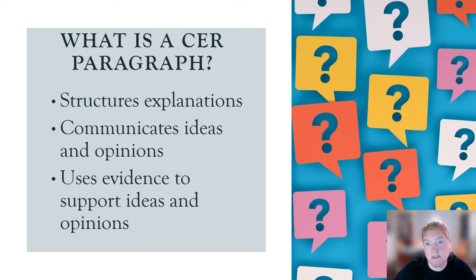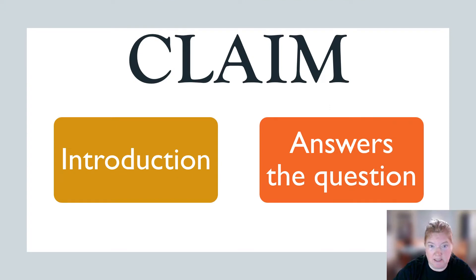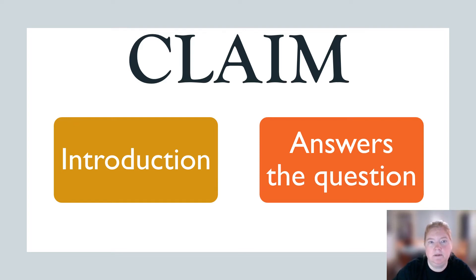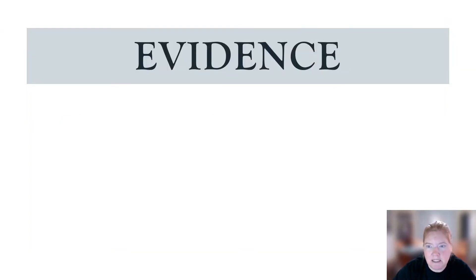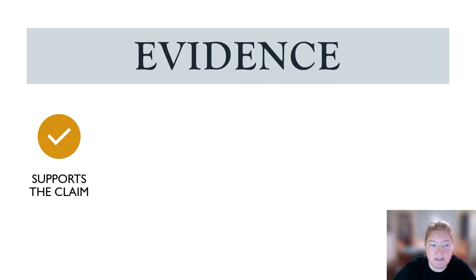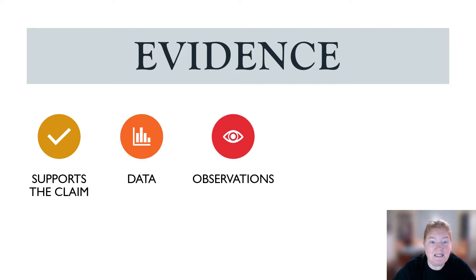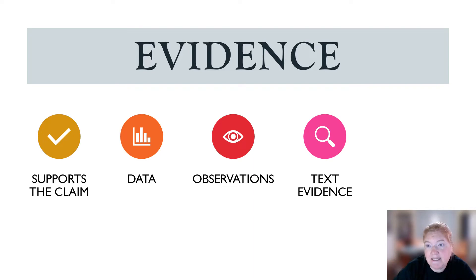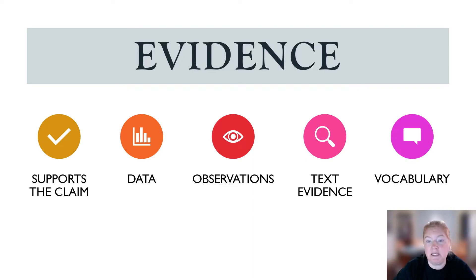So what are those parts? The C is claim. It's an introductory sentence. It answers the question. It responds to the prompt. E stands for evidence. It supports the claim. It's data, it's observation, it's text evidence, it's important vocabulary.